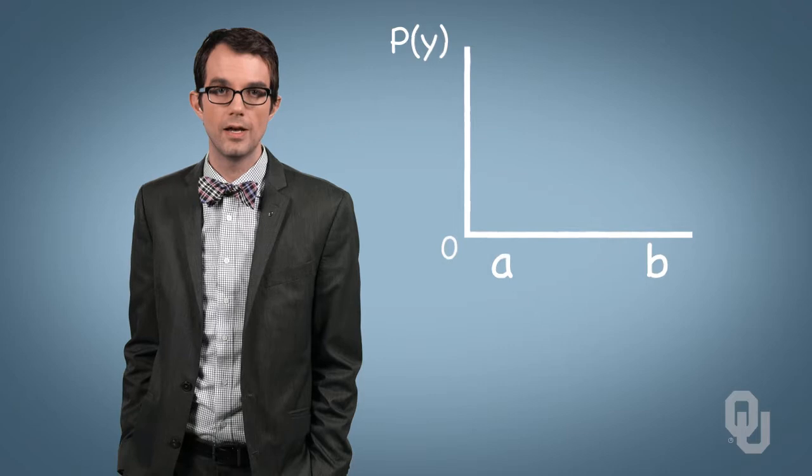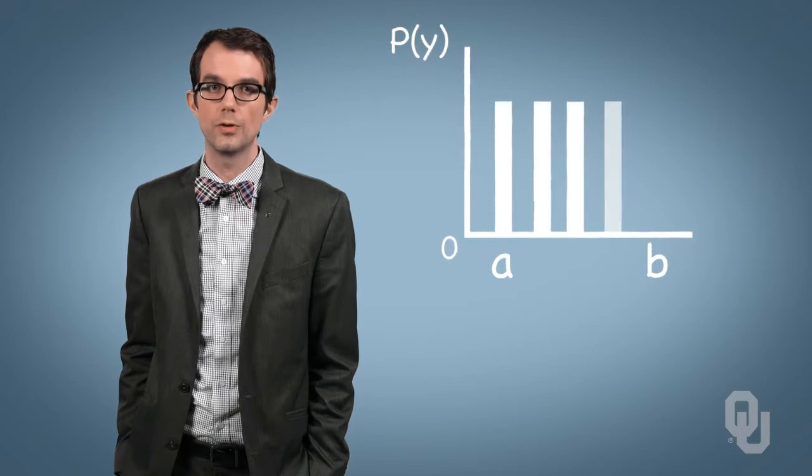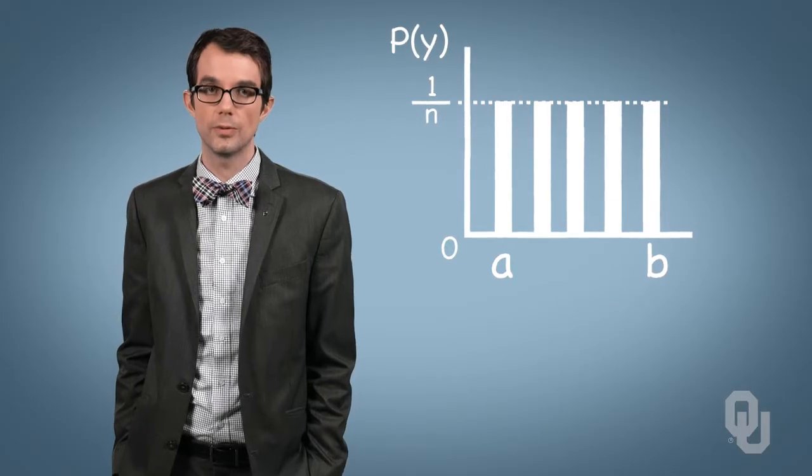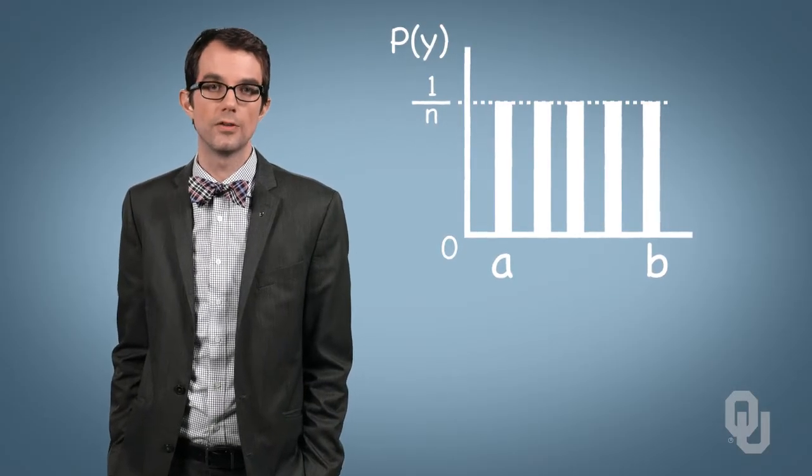The realizations of the uniform distribution are bounded by two integer values that we'll call a and b. And unlike the other discrete distributions we've seen, the lower bound a need not be zero because we're not necessarily dealing with counts as we were with the other distributions.